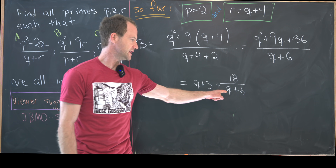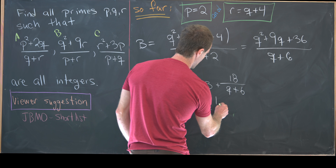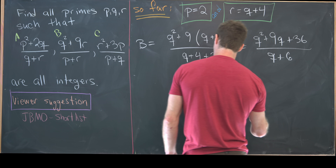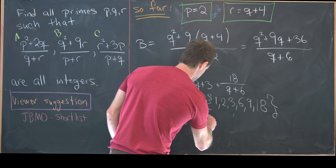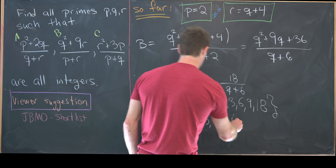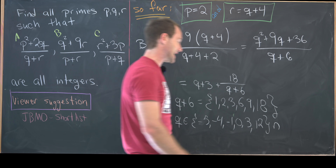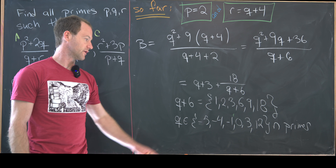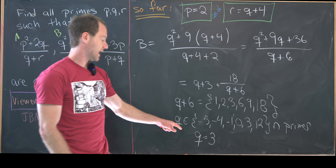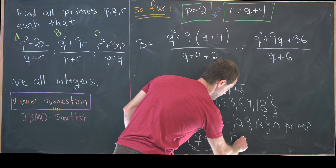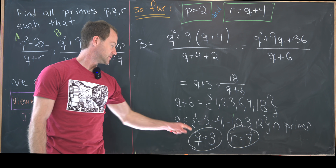The divisors of 18 give us q plus 6 in {1,2,3,6,9,18}, so q is in {-5,-4,-1,0,3,12}. Intersecting with the primes, the only prime in that set is q=3. So q must equal 3, and plugging back into r=q+4 gives r=7. Therefore the only triple satisfying all the conditions is p=2, q=3, and r=7.